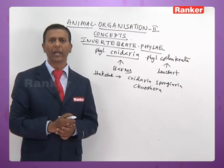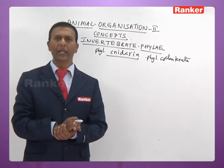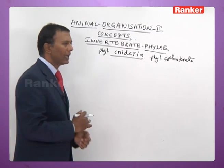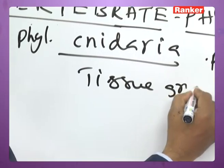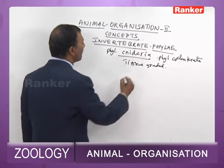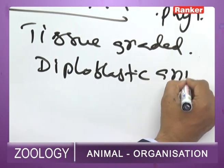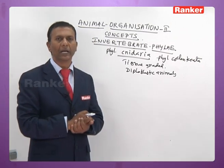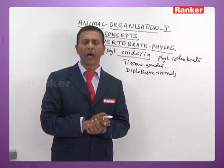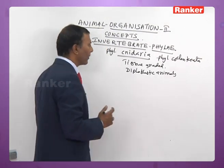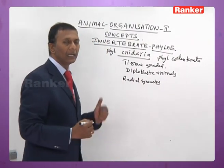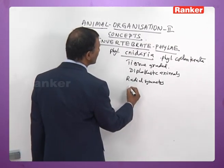Cnidarians are mostly marine with a few freshwater forms. They are both sedentary and free-living, solitary and colonial. They are the first phylum with tissue grade of organization and the first diploblastic animals, with an outer ectoderm (epidermis), inner endoderm (gastrodermis), and a middle non-cellular mesoglia. The body cavity is called coelenteron or gastrovascular cavity. Most cnidarians exhibit radial symmetry, while class Anthozoa exhibits biradial symmetry.